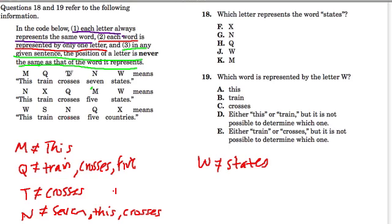T can't be crosses. That's interesting. It could be anything else. And M can't be this, five, or five. This or five. And W can't be states or this.